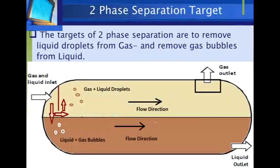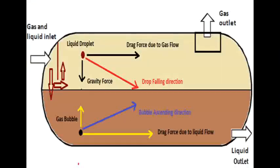The targets of two-phase separation are to remove liquid droplets from gas and to remove gas bubbles from liquids. Liquid droplets entrained in the gas stream must fall down to the liquid surface. This takes less than 5 seconds in small-diameter separators at low pressure, and up to 15 seconds in large-diameter separators at high pressure. The gas stream must remain in the separator longer than the time required for liquid droplets to fall. Droplet separation calculations are typically based on a 100 to 150 micron droplet diameter.